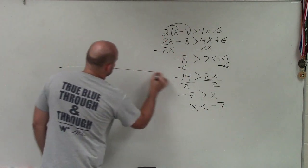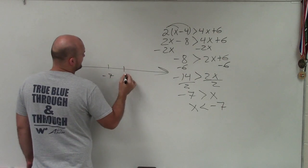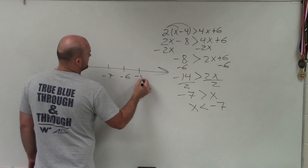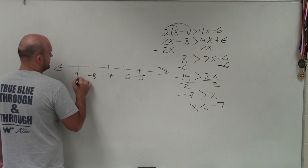To go ahead and graph this, I need to first make sure I have negative 7. So that would be negative 7, that would be negative 6, negative 5, negative 8, negative 9. Alright.